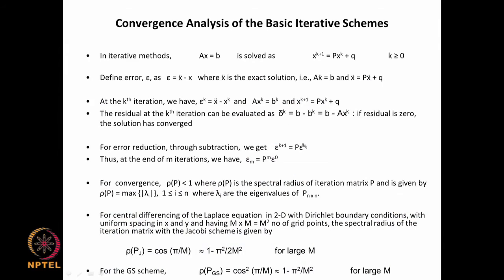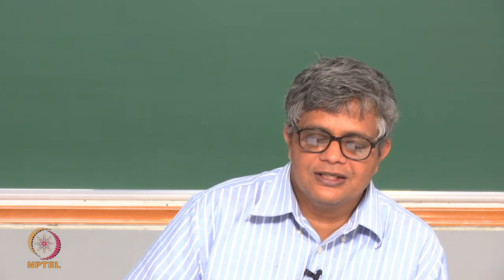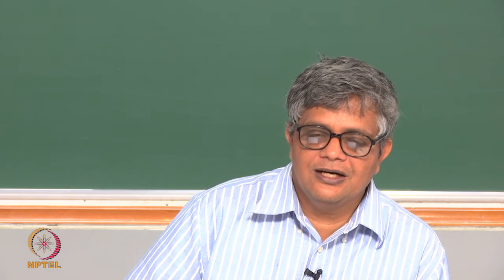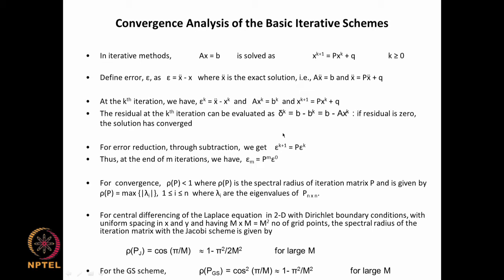We would like to decrease the residual. The superscript k tells us how many iterations have been done from the initial guess. Delta^k is not for a single equation — it is a column vector for the entire set of equations, indicating the amount of non-satisfaction of Ax = b for each equation. When we say the residual is zero, each value of this column vector must be zero, meaning each of the n equations must be satisfied.